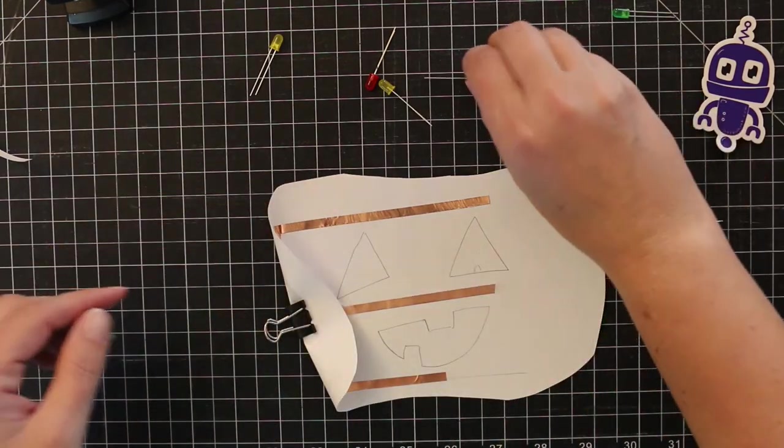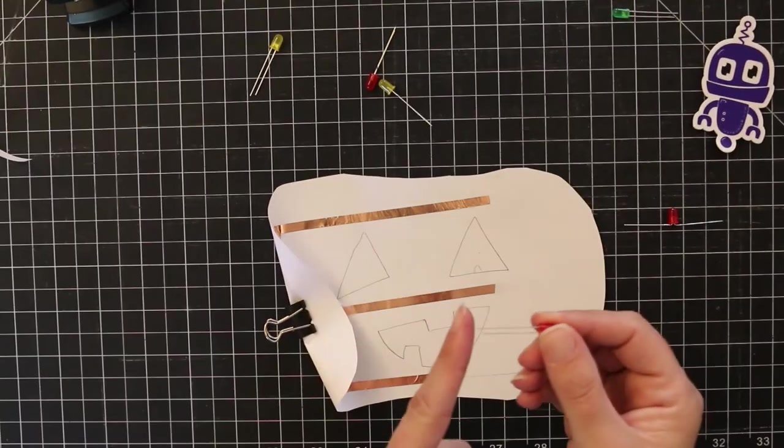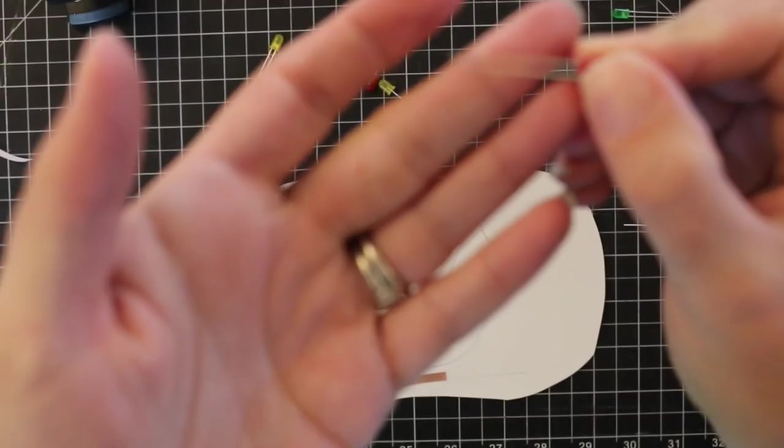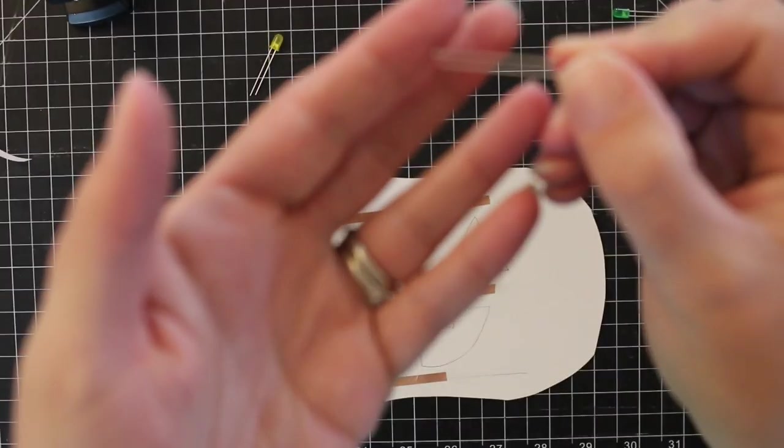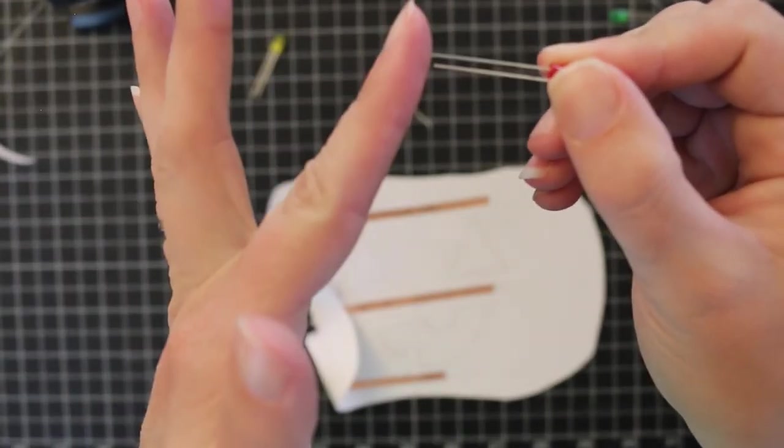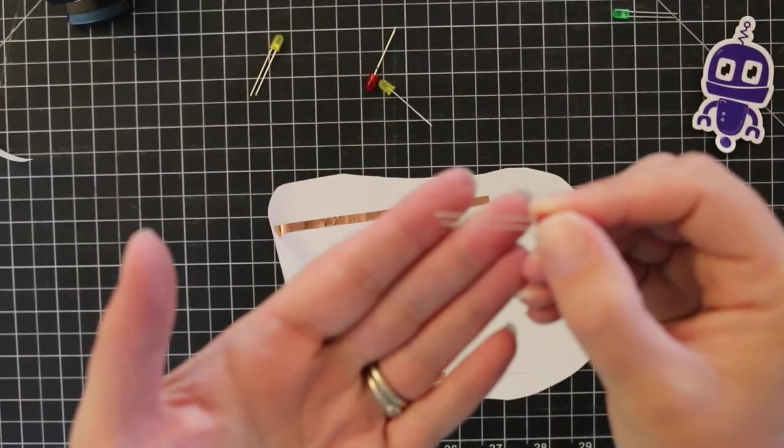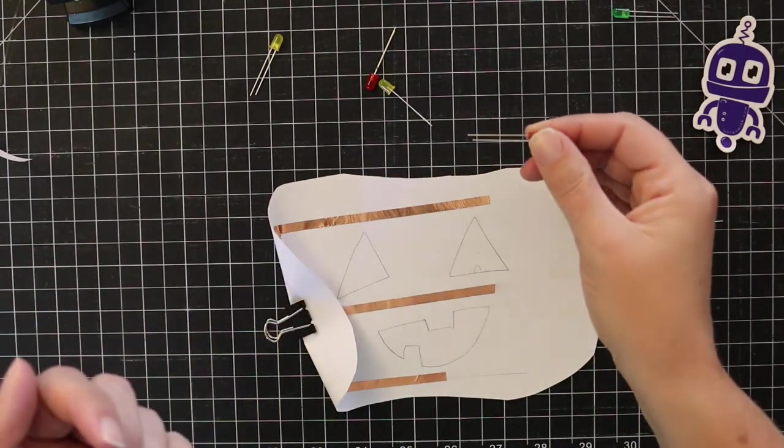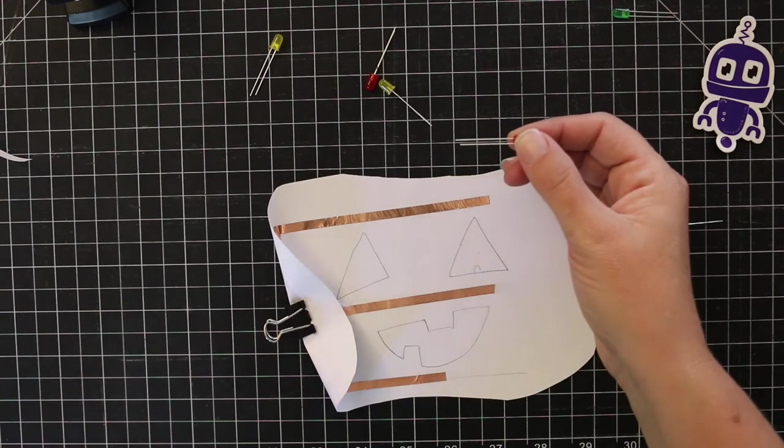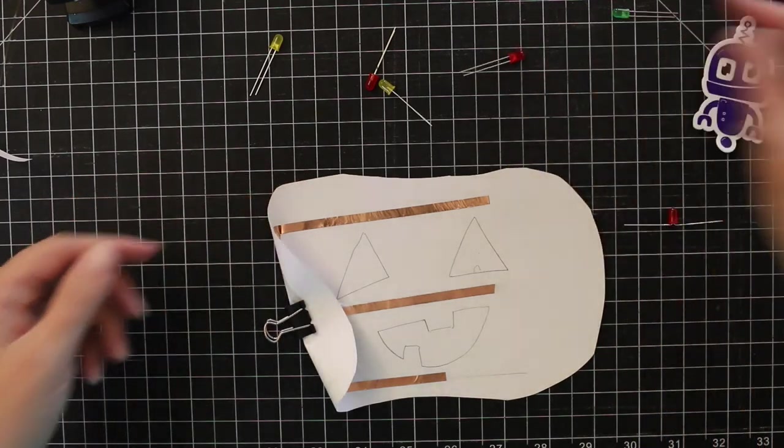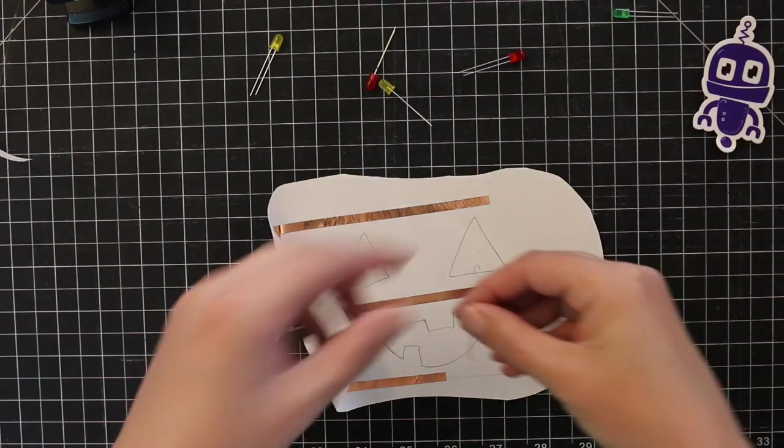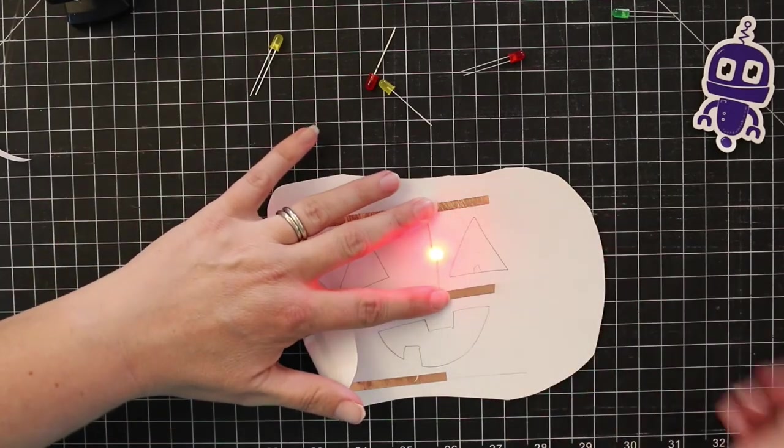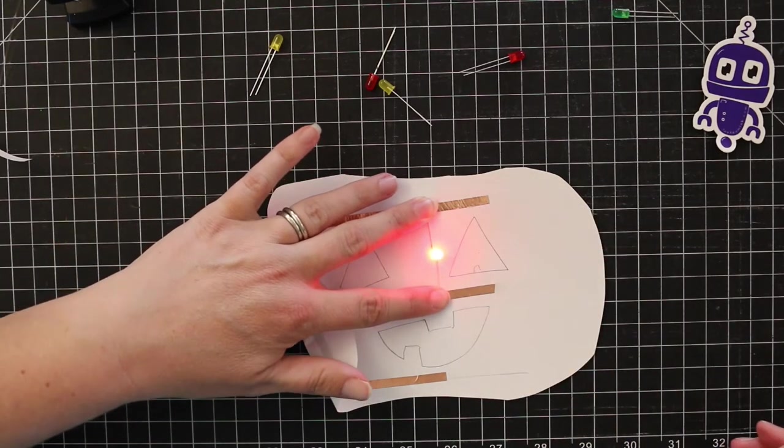And then if you look at your LEDs, they have a longer and a shorter side on them. This determines which side is positive and negative. And I'm going to be honest, I always forget. So I just try both ways with my LEDs until I find the one that works. And that clearly is the one that works.